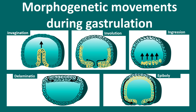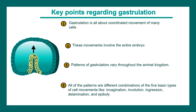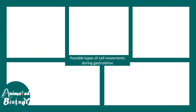In this video we'll talk about the morphogenetic movements that are happening during the process of gastrulation. Here are a few key points regarding gastrulation. Gastrulation is all about coordinated movement of many cells, and this movement happens throughout the embryo. Patterns of gastrulation vary throughout the animal kingdom, and there are several types of core movements that can happen during gastrulation. In this video we are going to talk about that.